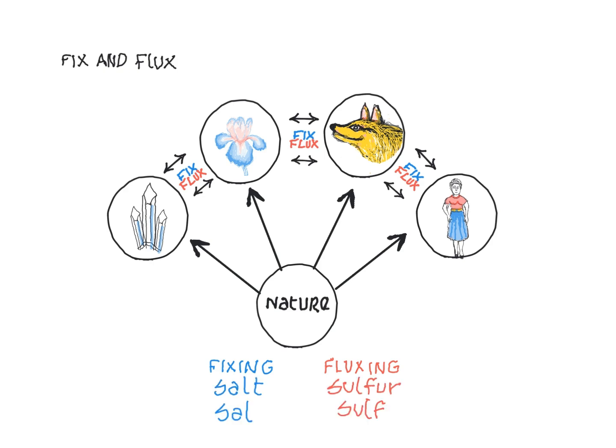Alchemically, salt or sal is fixing. Its polarity, sulfur or sulf, is fluxing. In today's scientific language, upregulating describes a sulf or fluxing process, while down-regulating describes a sal or fixing process.